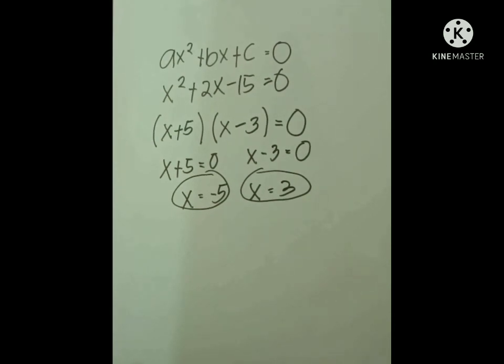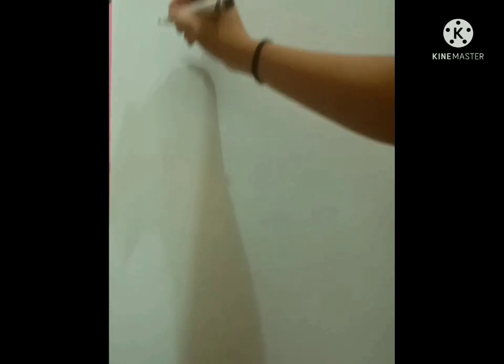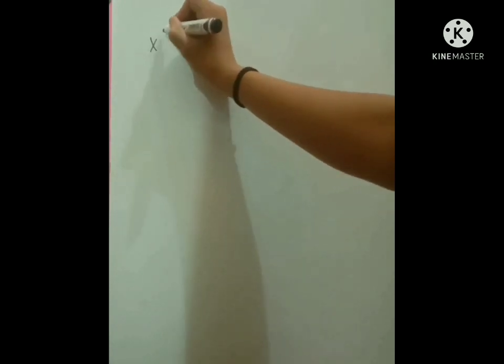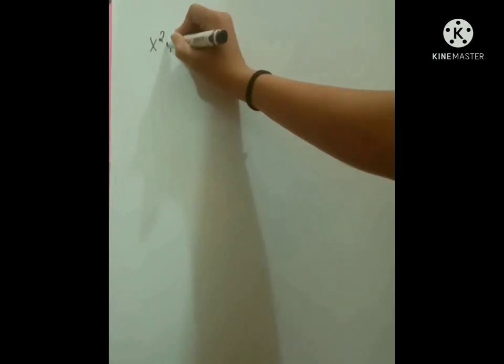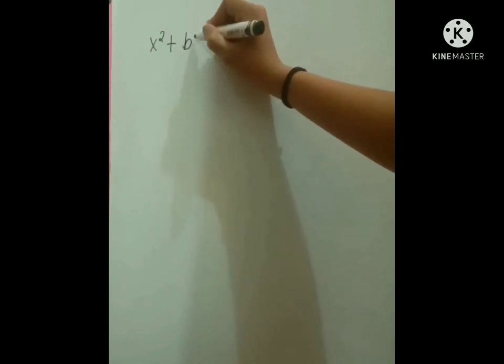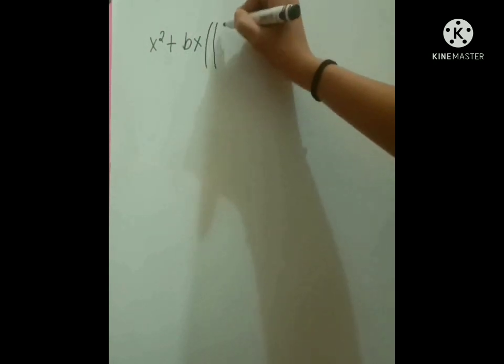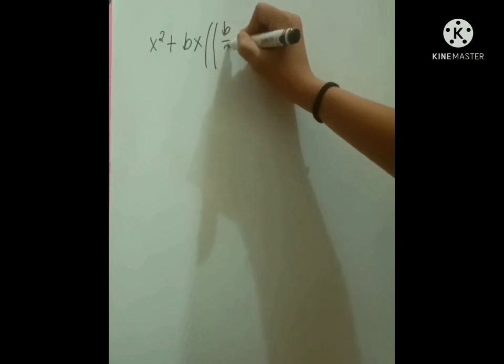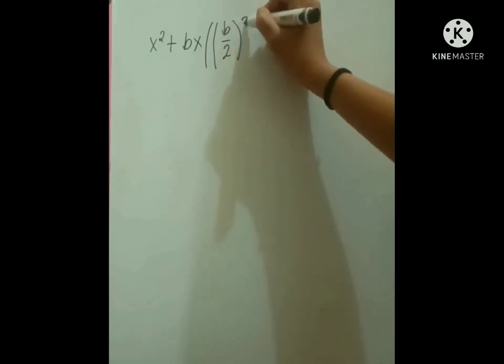So our roots are negative 5 and 3. Now let us proceed to our next method using completing the square. In this method we will be using the formula x squared plus bx times b over 2 squared plus c minus b over 2 squared equals 0.